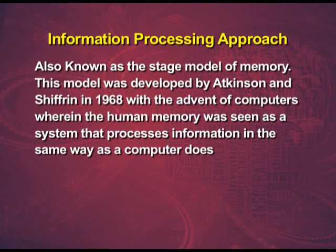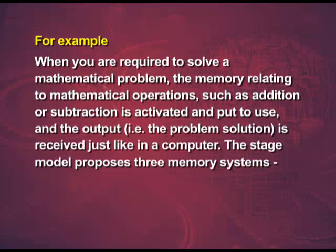We now come to the Information Processing Approach, also known as the stage model of memory. This model was developed by Atkinson and Schiffrin in 1968 with the advent of computers, wherein human memory was seen as a system that processes information in the same way as a computer does. Just as a computer has temporary and permanent memory and manipulates its contents to display output, human beings similarly register, store and manipulate information. For example, when solving a mathematical problem, memory relating to operations such as addition or subtraction is activated, and the solution is received just like in a computer.